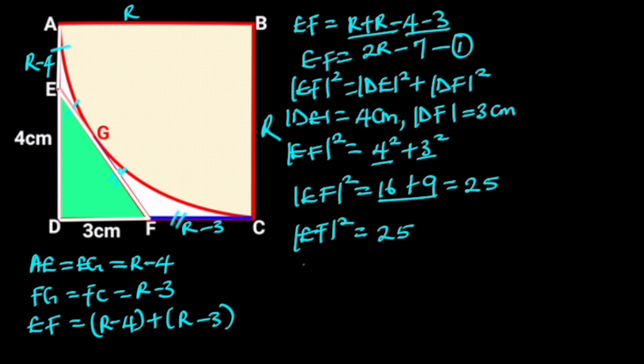Taking the square root of both sides will give us EF is equal to the square root of 25. The square root of 25 is 5. Next, we substitute EF is equal to 5 in equation 1. It follows that 5 is equal to 2R minus 7.